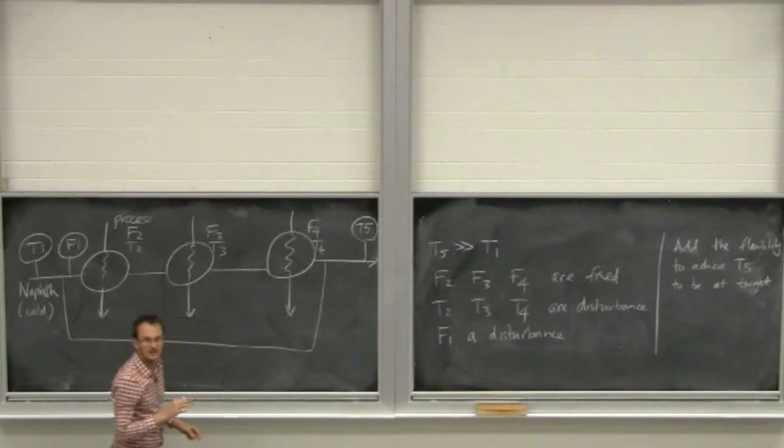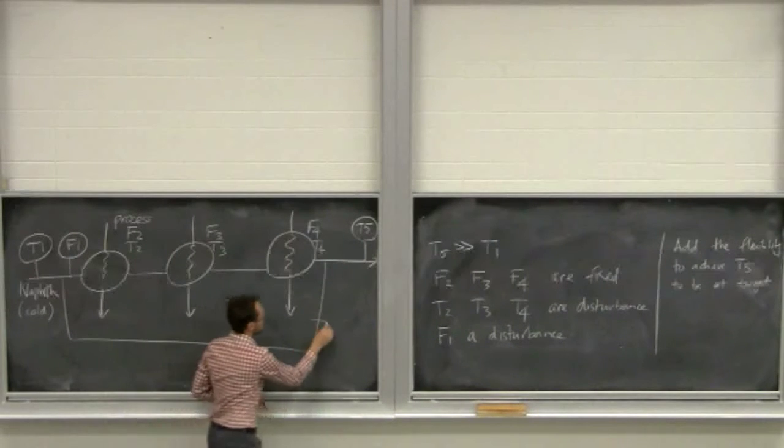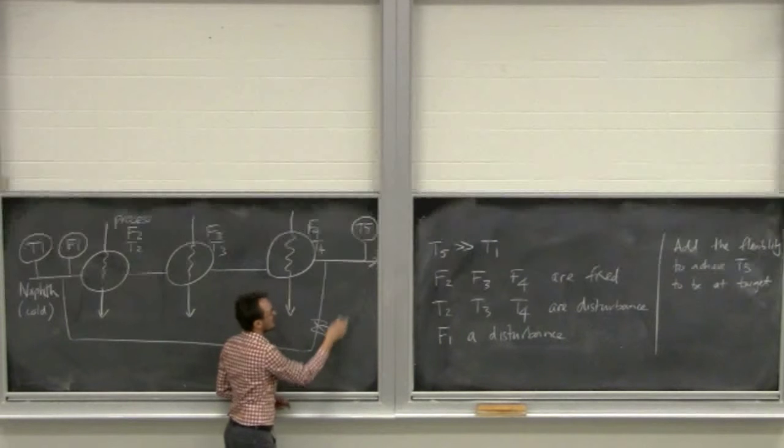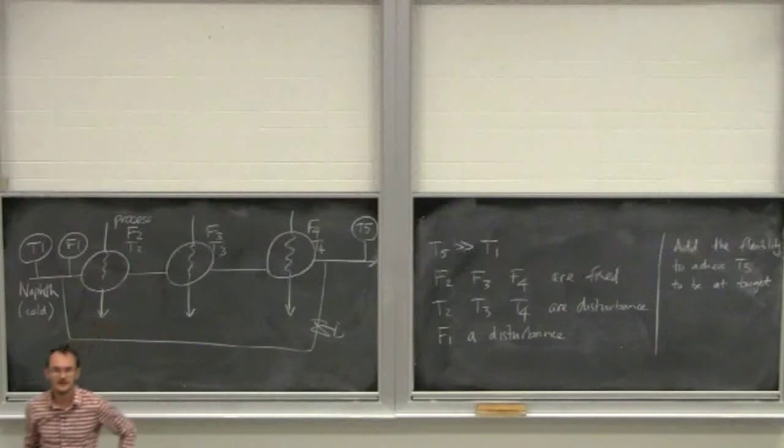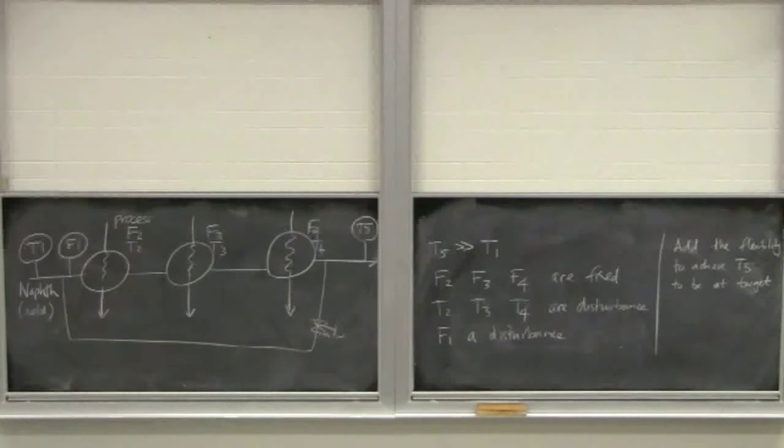So a bypass around and then where's your manipulated variable? You have a valve on that bypass. So, somewhere on this bypass, put a valve and control it to that T5. Okay. So, that's one option. Other suggestions? Mark?